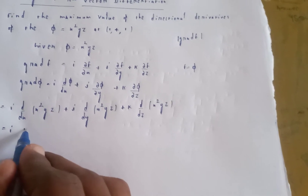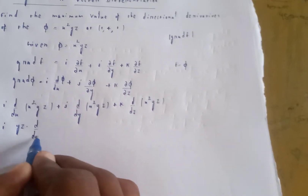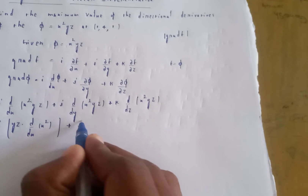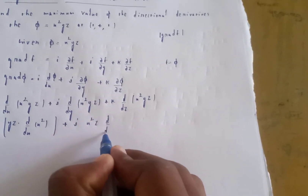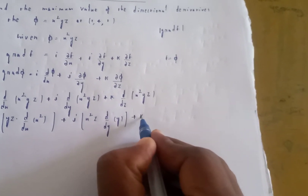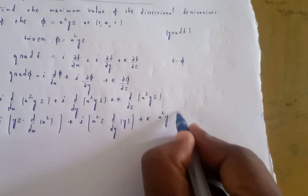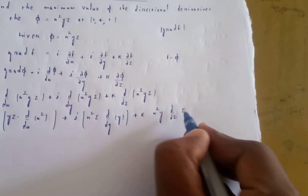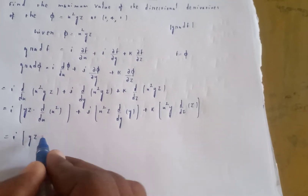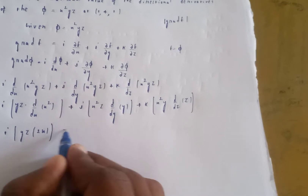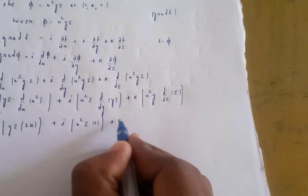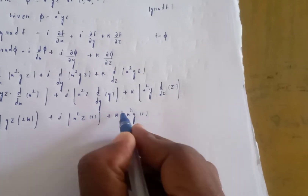i: y z is constant, d/dx of x squared gives 2x. j: x squared z is constant, d/dy of y gives 1. k: x squared y is constant, d/dz of z gives 1. So gradient phi equals i of 2xyz plus j of x squared z plus k of x squared y.